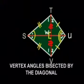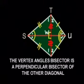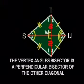The vertex angles are bisected by the diagonal which connects them. The diagonal connecting the vertex angles is a perpendicular bisector of the other diagonal.